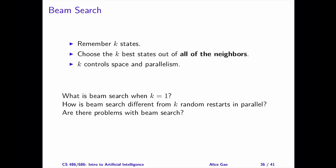The value of k affects beam search in several ways. It affects the amount of memory we need — the larger the k, the more memory we need to store the population. The value of k also controls the level of parallelism. A larger k makes the search more parallel, as we will be considering the neighbors of a larger number of states at each time step.